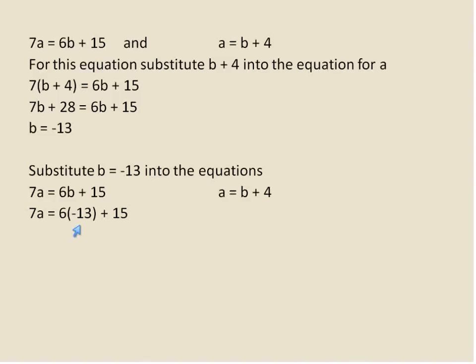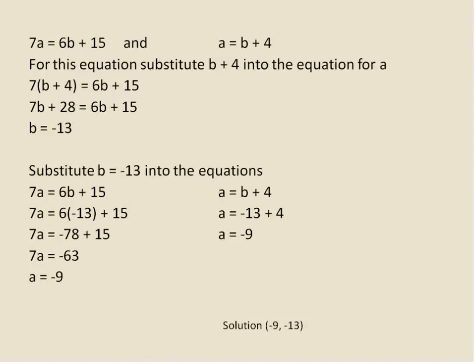So everywhere I see the letter b, I substitute the value of negative 13. 6 times negative 13 is negative 78. Adding that to 15 gives me negative 63. Dividing both sides by 7, I get a equals negative 9. Coming over to the other equation and substituting b equals negative 13: a equals negative 13 plus 4, which gives a equals negative 9. So the final solution for this system is a equals negative 9, b equals negative 13.